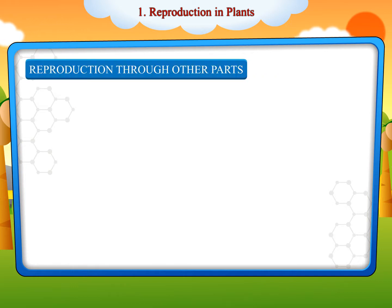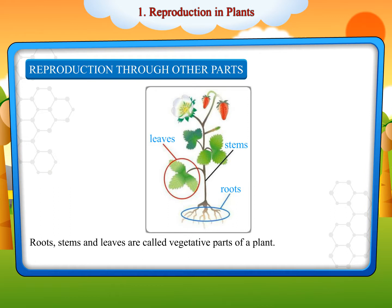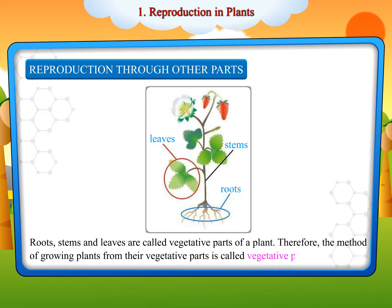Reproduction through other parts: Roots, stems and leaves are called vegetative parts of a plant. Therefore, the method of growing plants from their vegetative parts is called vegetative propagation.